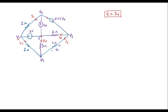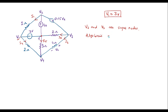Now here one more thing we can observe: in between node V2 and V3, there is a voltage source. If a voltage source is connected directly between two nodes, those two nodes are known as super nodes. So here V2 and V3 are super nodes, as a voltage-dependent voltage source is connected between them. When V2 and V3 are super nodes, the algebraic sum of currents at super nodes is always 0.